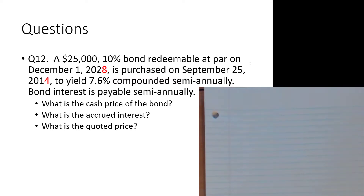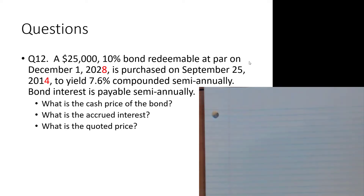We have a twenty-five thousand dollar ten percent bond, so the bond rate is ten percent, redeemable at par. Redeemable at par just means it's redeemable at that twenty-five thousand dollars. It could be redeemable at 101%, 110%, or 103% of par — so 1.03 times that twenty-five thousand dollars. Often it's just redeemable at face value, but it doesn't have to be.